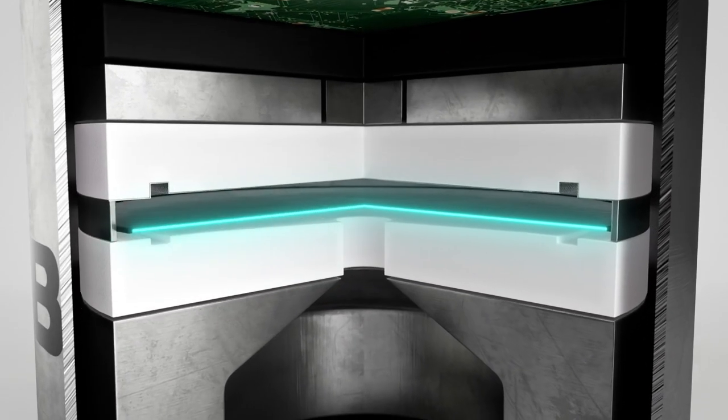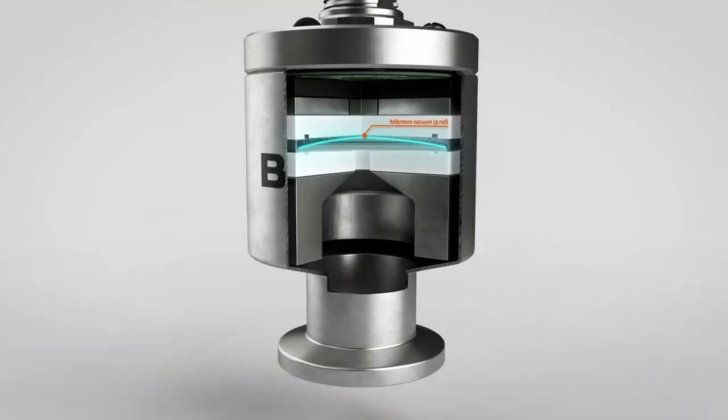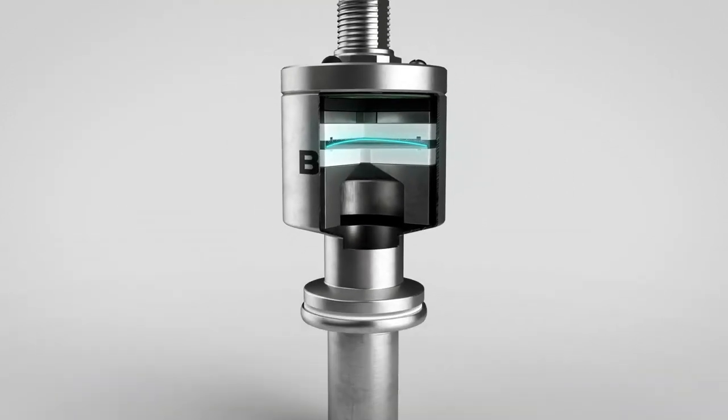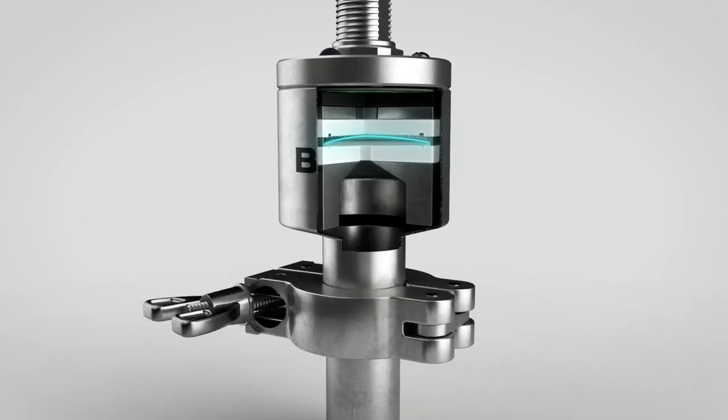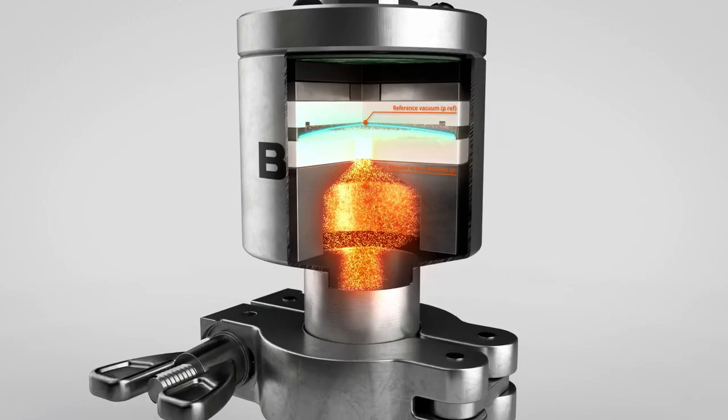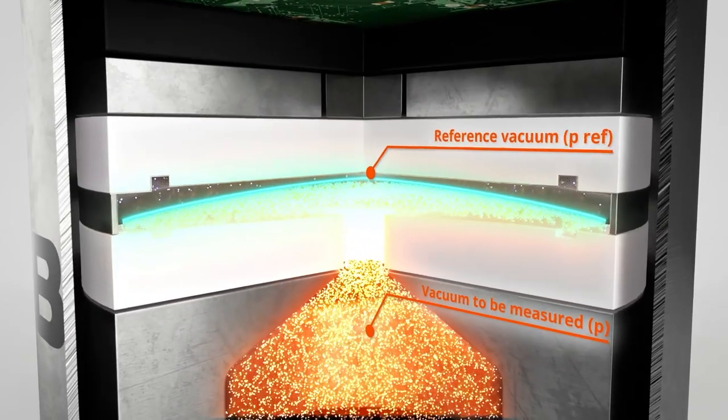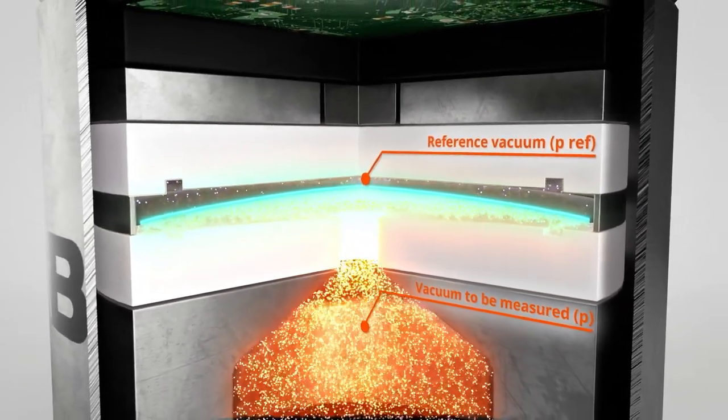Inside a capacitive gauge, there are two chambers, one containing the reference vacuum and one containing the process gas. The two chambers are separated by a diaphragm. This is a thin, flexible membrane and how it moves is used to determine the pressure of the process gas.